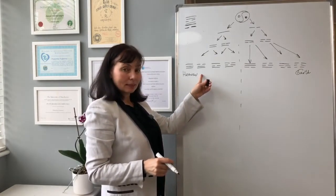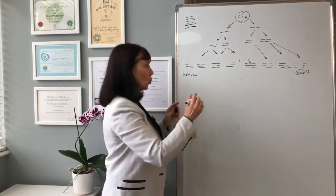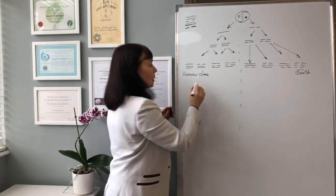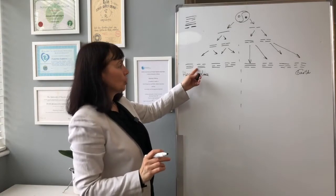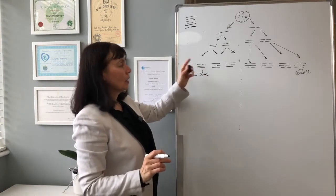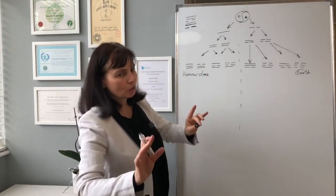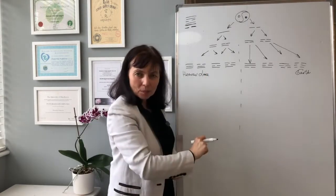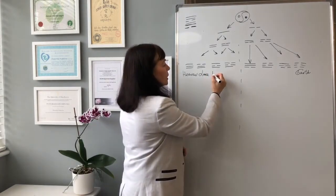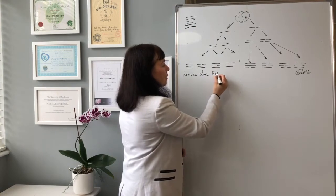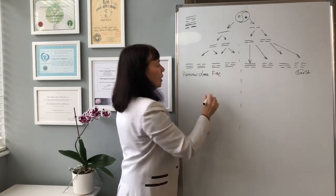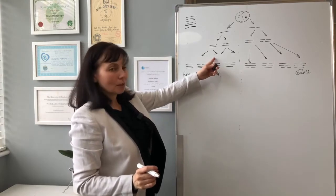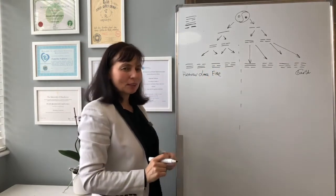The next trigram is called Lake. On the solid nature, a soft water — this is how to remember it. The next trigram is related to fire. Look at the trigram: it's very yang on the sides and very soft in the middle.